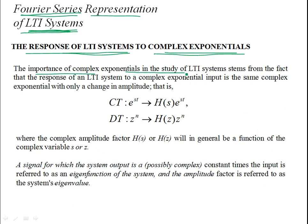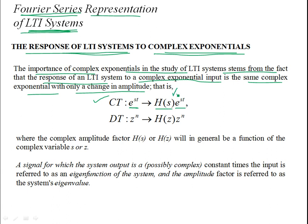The importance of complex exponentials in the study of LTI systems stems from the fact that the response of an LTI system to a complex exponential input is the same complex exponential, only with a change in amplitude. So if you apply a complex exponential e^(st) — where s is a complex variable — to a continuous time system, the output will also be e^(st) multiplied by a complex constant H(s), which is a function of s but not of t. This complex amplitude H(s) is referred to as the eigenvalue of the system.